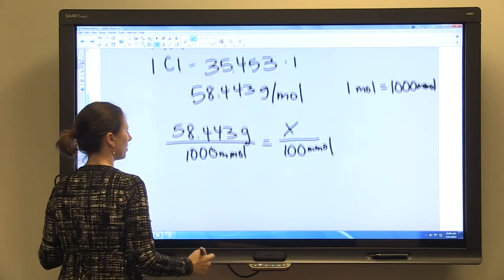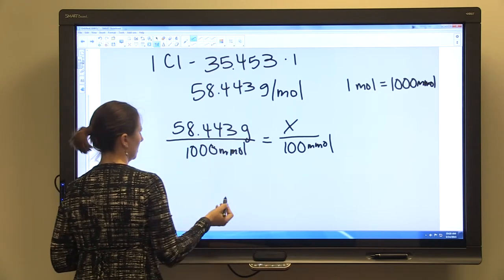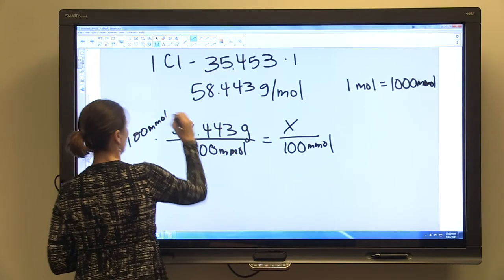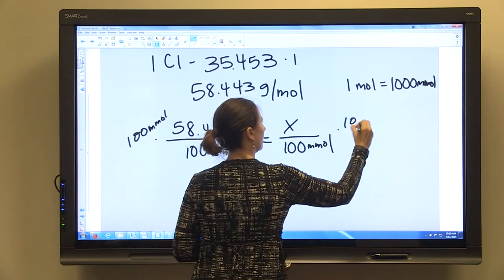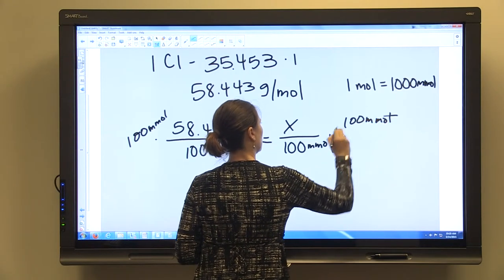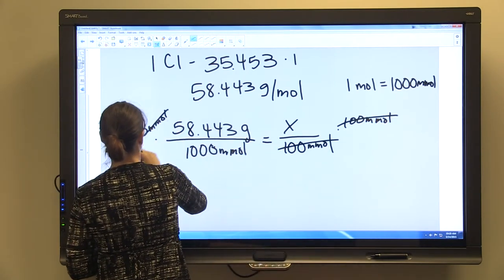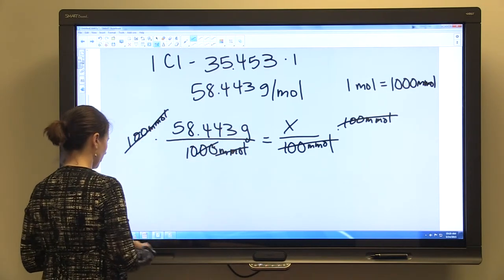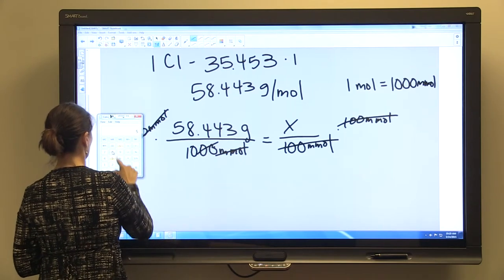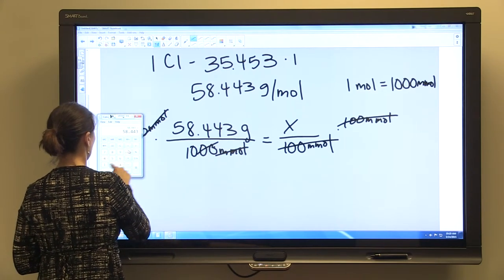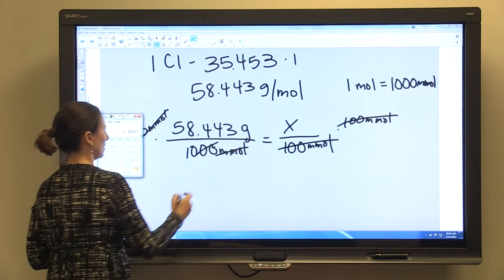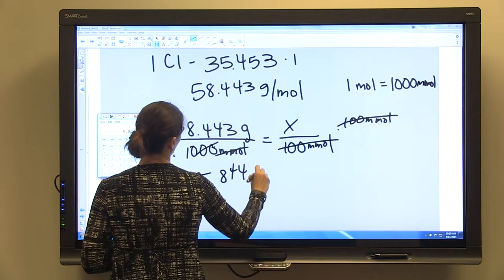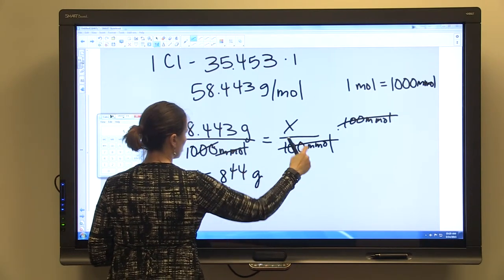If we solve for x, multiply both sides by 100 millimolar NaCl. That leaves us with 10 on this side. So 58.443 divided by 10 is 5.844 grams per 100 millimoles.